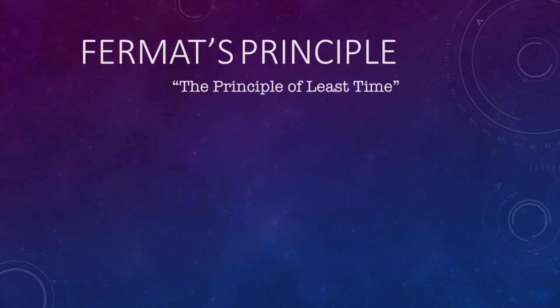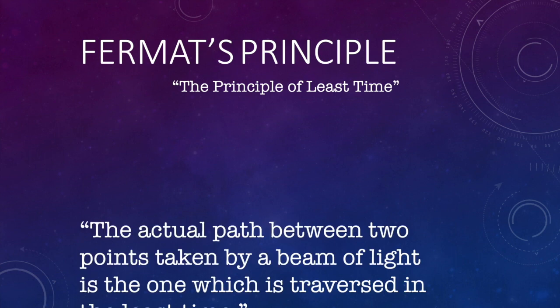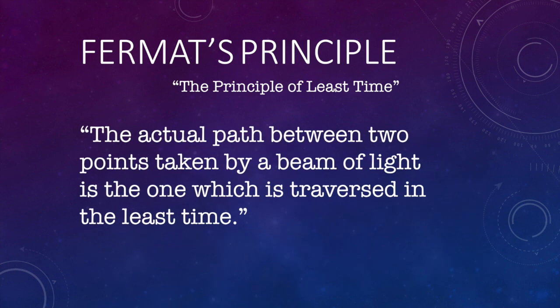What is Fermat's principle? Fermat's principle, also referred to as the principle of least time, is a theory that describes the path a light beam would take in going from a point A to point B. It states that the actual path between two points taken by a beam of light is the one which is traversed in the least time.